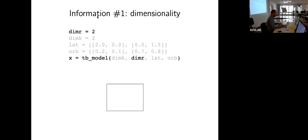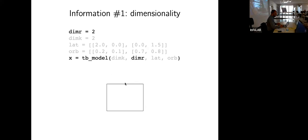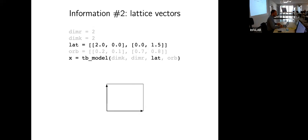The first piece of information you have to tell this tight-binding model is the dimensionality of the space you're working in. For example, if you work in two dimensions you specify the number 2, meaning you work in a plane. Next, you have to specify the lattice vectors. The first vector has x-component 2 and y-component 0; the second vector has x-component 0 and y-component 1.5.